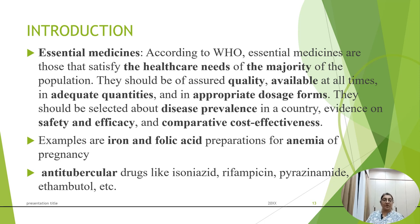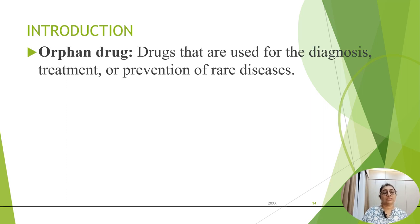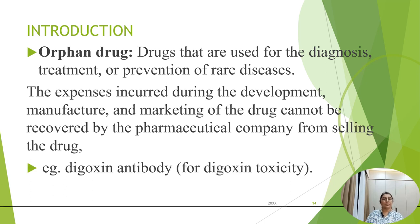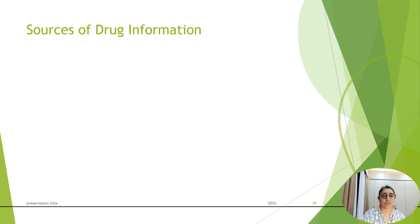Anti-tubercular drugs like isoniazid, rifampicin, pyrazinamide, and ethambutol are also included in the essential drug list. Orphan drugs are those used for the diagnosis, treatment, and prevention of rare diseases. The expense of their development, manufacture, and marketing cannot be recovered by the pharmaceutical company from drug sales. Examples include digoxin antibodies for digoxin toxicity and fomepizole used in methyl alcohol poisoning. These drugs are not easily accessed in the market.